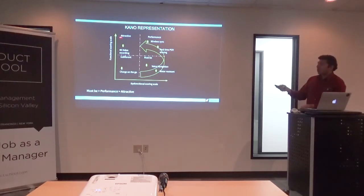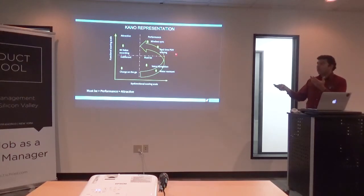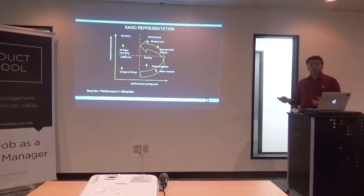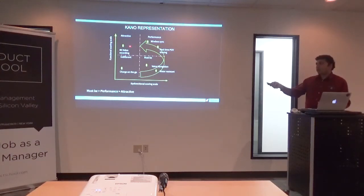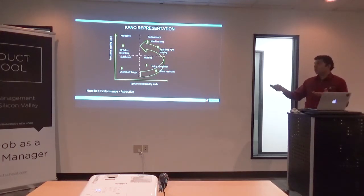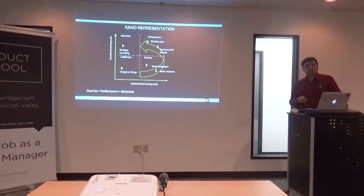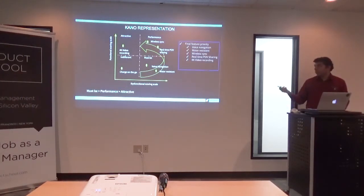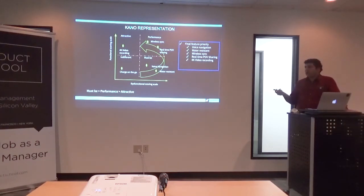Within the performance segment from the last table, there were two things: wireless sync and real-time point of view share. You rank them based on the scores you got. And the very last feature — which customers didn't expect because no other headset had it in our example — would be the attractive feature of 4K video streaming. Another advantage of this quadrant is that you've created a map for your engineering team to focus on the right features. You cannot ship without the must-have feature, so all time and effort focuses on it first. Once that's met within your Agile Scrum or sprint, you focus on the performance features, and then finally the ambitious 4K video feature.